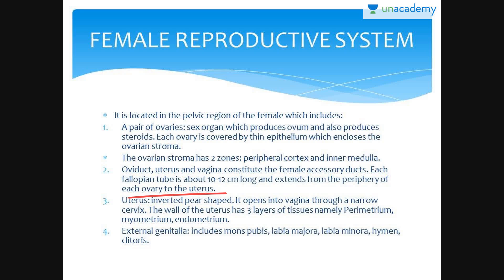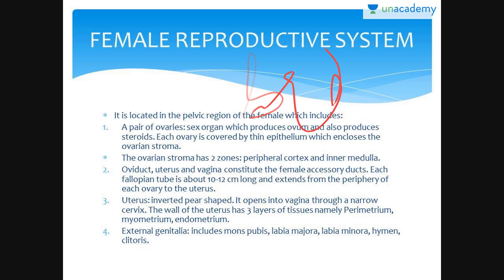The edges of the infundibulum possess finger-like projections known as fimbriae, which help in collection of the ovum after ovulation. The last part of the oviduct is called isthmus, which is joined to the uterus.